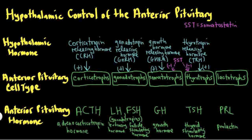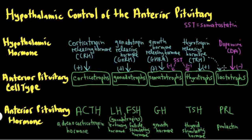The major control of lactotrophs is a little different from the other cell types because it's primarily under the influence of dopamine, abbreviated DA, which inhibits the lactotrophs. Dopamine is also unique in that it's the only hypothalamic hormone listed here that's not a peptide — it's a modified tyrosine, which is an amino acid — and it suppresses prolactin by binding to dopamine receptors on the lactotrophs. TRH can have a mild stimulatory effect on lactotrophs in certain circumstances where TRH is very high, but like somatostatin, it's not a major regulator of lactotrophs.